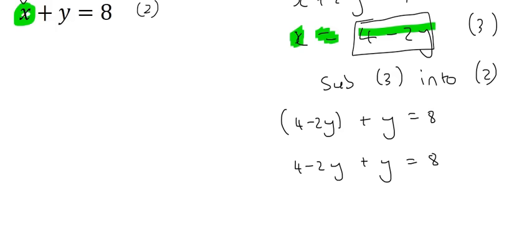I'm going to take the y's to the right and bring the numbers to the left. On the left we're going to have four minus eight, and on the right we're going to have 2y minus y. So on the left we'll have minus four, and on the right we'll have y. So y is equal to negative four.